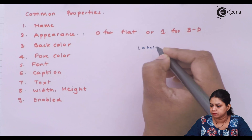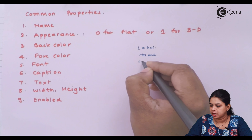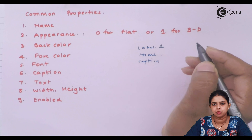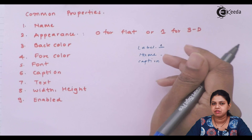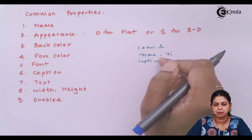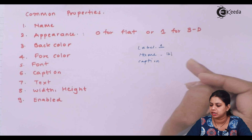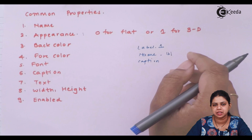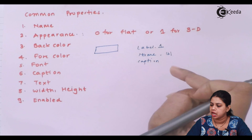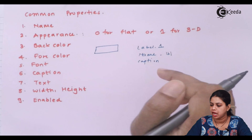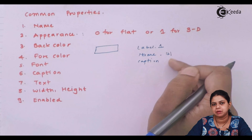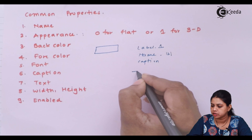Let us discuss the properties of some important tools. For the label, we change the name and caption properties. By default, a label's name is 'Label1', but you can change it. When changing the name of a label, we use the abbreviation 'lbl', followed by any name. The caption property is used to display the caption on the label — for example, setting the caption to 'Name'. The name property default is 'Label1', which you can rename to something like 'lblName'.